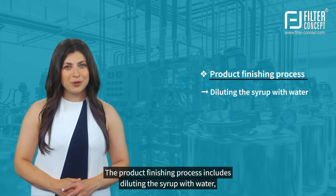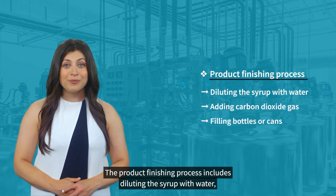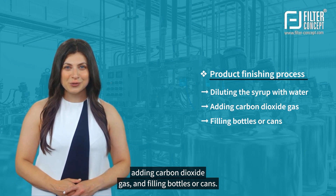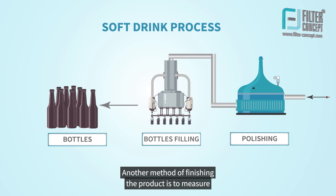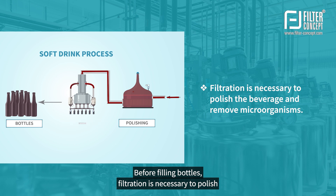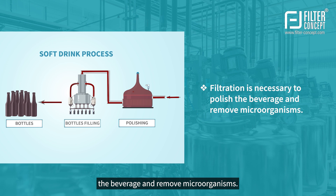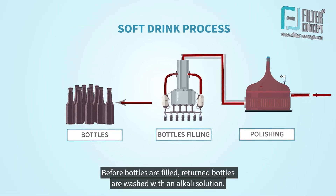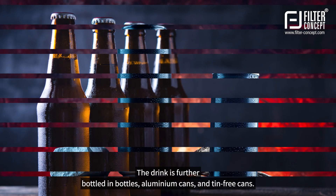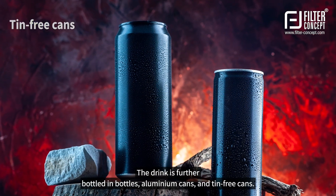The product finishing process includes diluting the syrup with water, adding carbon dioxide gas, and filling bottles or cans. Another method is to measure syrup from bottles and add blended carbonated water to them. Before filling bottles, filtration is necessary to polish the beverage and remove microorganisms. Returned bottles are washed with an alkalized solution. The drink is further packed in bottles, aluminum cans, and tin-free cans.